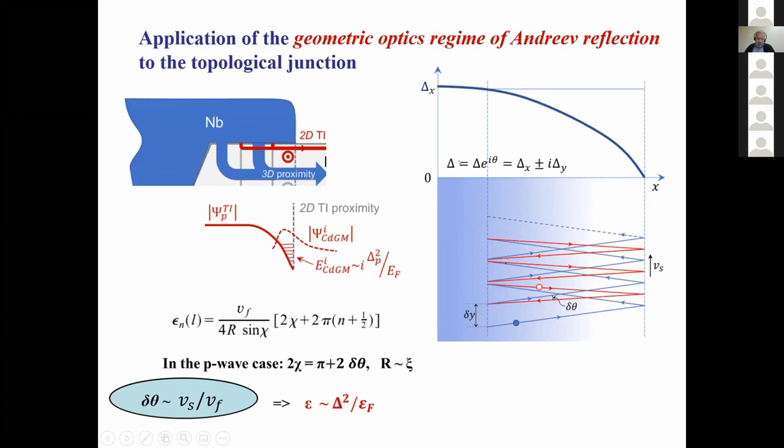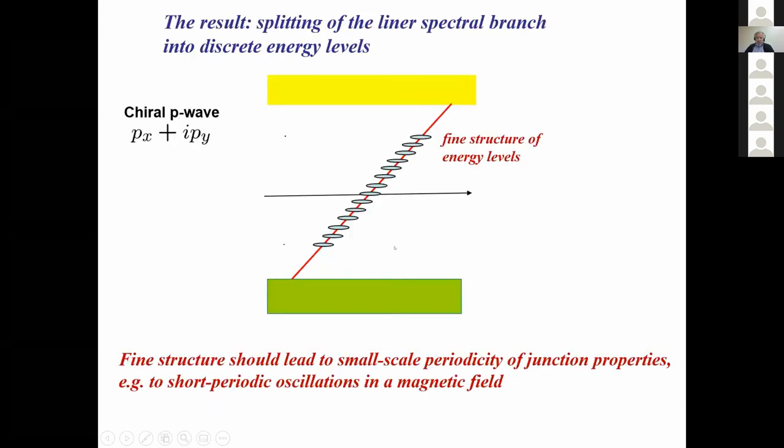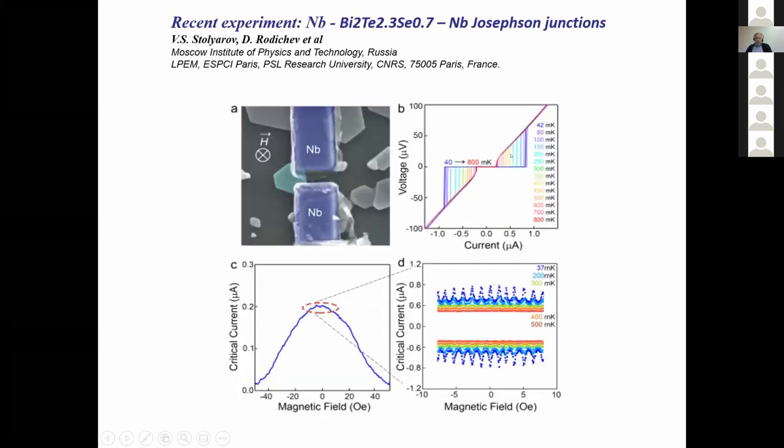Now the next point - I don't go into detail to the theory, but if you consider the possibility of chiral P-wave symmetry in this range, then what we can predict is the splitting of this chiral branch in a set of energy levels. We predict the existence of fine structure with typical distance between these energy levels of the order of delta multiplied by a small parameter delta over E_Fermi - so delta squared divided by E_Fermi.